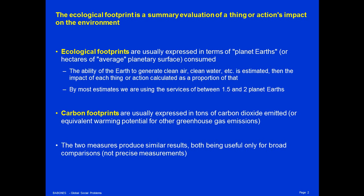By most estimates we are using the services of between 1.5 and 2 planet Earths per year. What this means is that we are constantly degrading the capacity of the Earth to provide ecological services. For example, take fresh water. We use more fresh water every year than the Earth regenerates. As a result, we are degrading the Earth's very capacity to produce fresh water because we are draining out the lakes and pulling water out of the aquifers, making it more difficult for the Earth to give us the ecological resources we need.